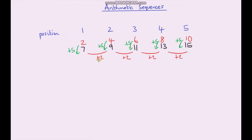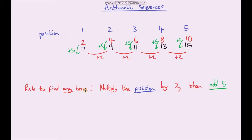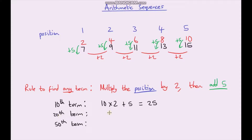So if we wanted to come up with a rule to find any term in the sequence: first of all because it's similar to our two times table we're going to multiply the position by two, and then we're going to add on five. So the rule to find any term in our sequence is multiply the position by two and then add five. If we wanted to find the tenth term we multiply ten by two and then add five. To find the twentieth term we do twenty times two and then add on five which gives us 45, and then to work out the fiftieth term we do fifty times two and then add on five and that gives us one hundred and five.